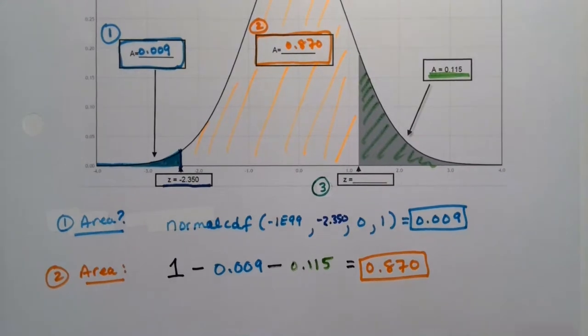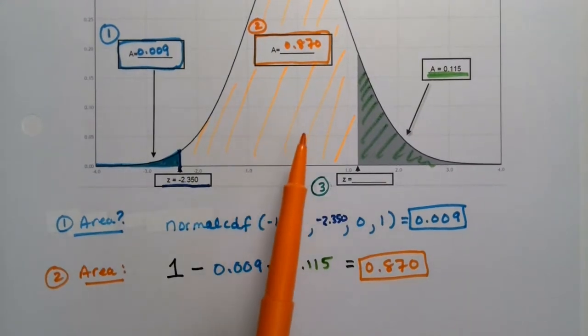So 1 take away 0.009 take away 0.115, and I get 0.876. So that's the middle, 0.876, and it looks like it since this is drawn to scale.